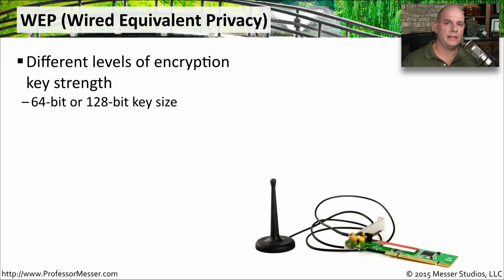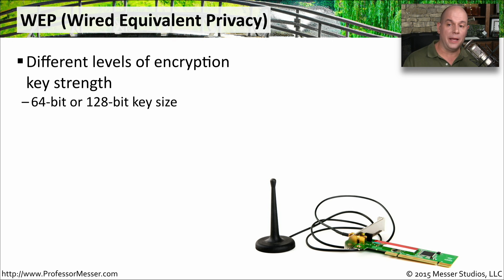When our 802.11 technologies were first introduced, they included an encryption mechanism called WEP — Wired Equivalent Privacy. It provided a couple of different types of encryption: we could enable 64-bit keys or 128-bit keys. With a name like Wired Equivalent Privacy, it sounds like we'd have exactly the same privacy on our wireless network as we would on a wired network.